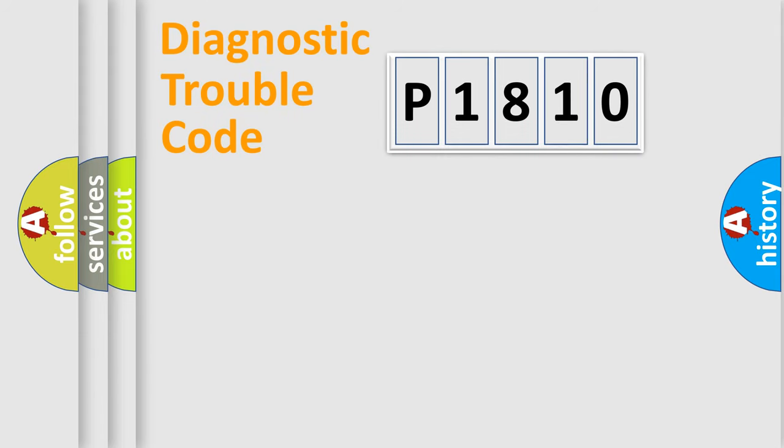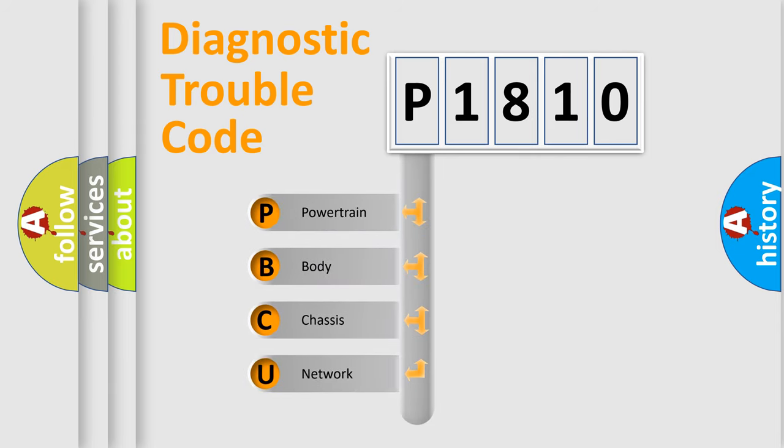First, let's look at the history of diagnostic fault code composition according to the OBD2 protocol, which is unified for all automakers since 2000. We divide the electric system of automobile into four basic units.